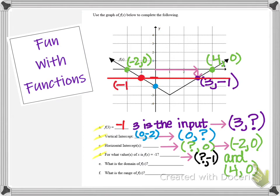The horizontal line touches the graph at two points. The first point is (-1, -1), and the second point — which we've already seen — is (3, -1). So there are two values of x where the output value is negative 1: x equals negative 1 and x equals 3.